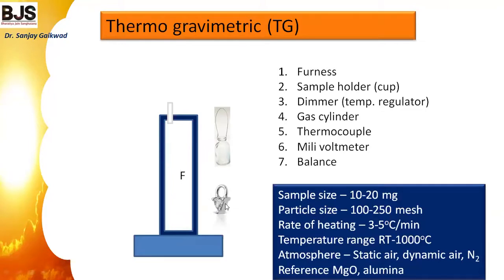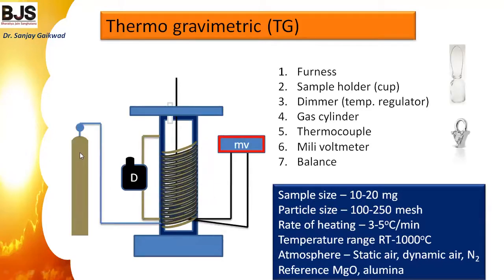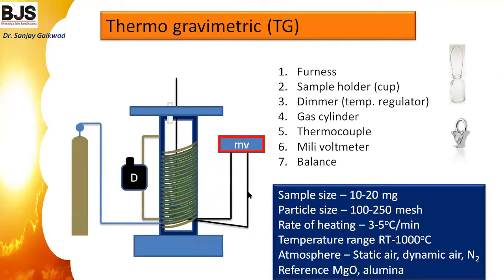A platinum cup can hang inside the instrument and be kept in a crucible in the furnace. The dimmer is used to control and heat the furnace under controlled conditions. Gas cylinders supply air or nitrogen to maintain a nitrogen or oxygen atmosphere in the furnace. A thermocouple measures temperature in millivolts, which can be converted to degrees Celsius or Kelvin.